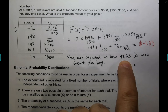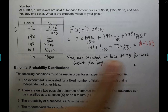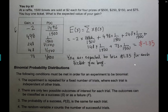Every single machine built in Las Vegas is designed so that the expected value is negative. There is no machine with an expected value of zero — that would mean a 50/50 chance of winning or losing, and casinos can't operate that way.